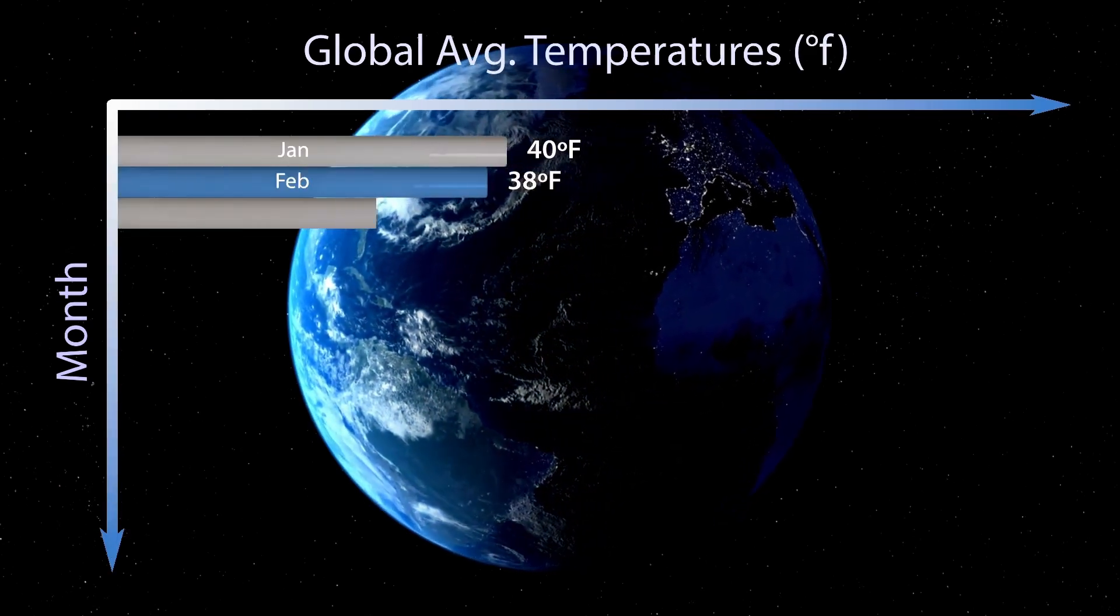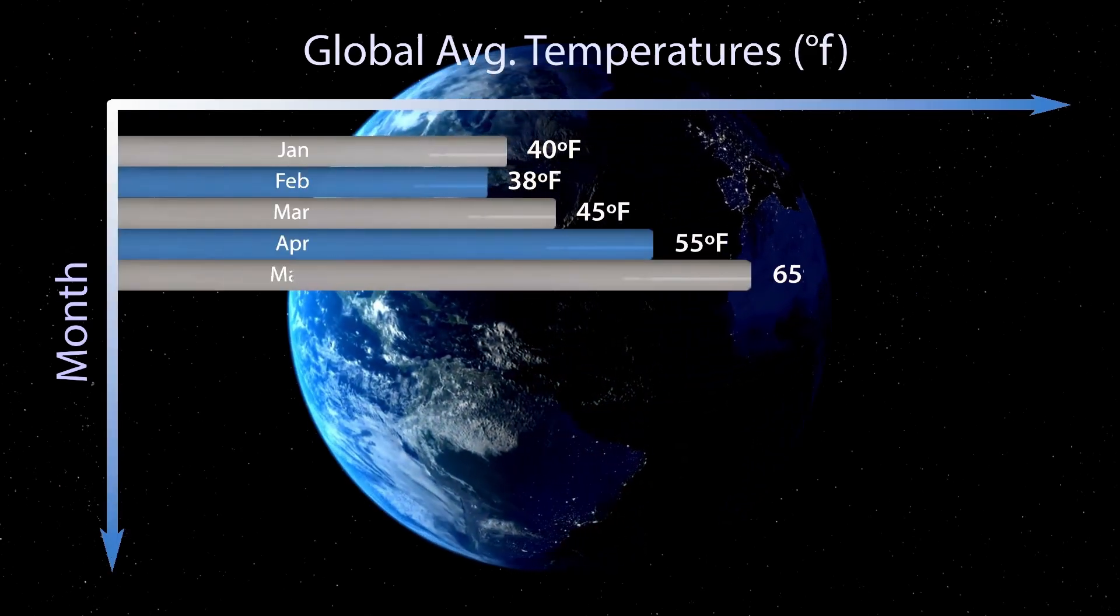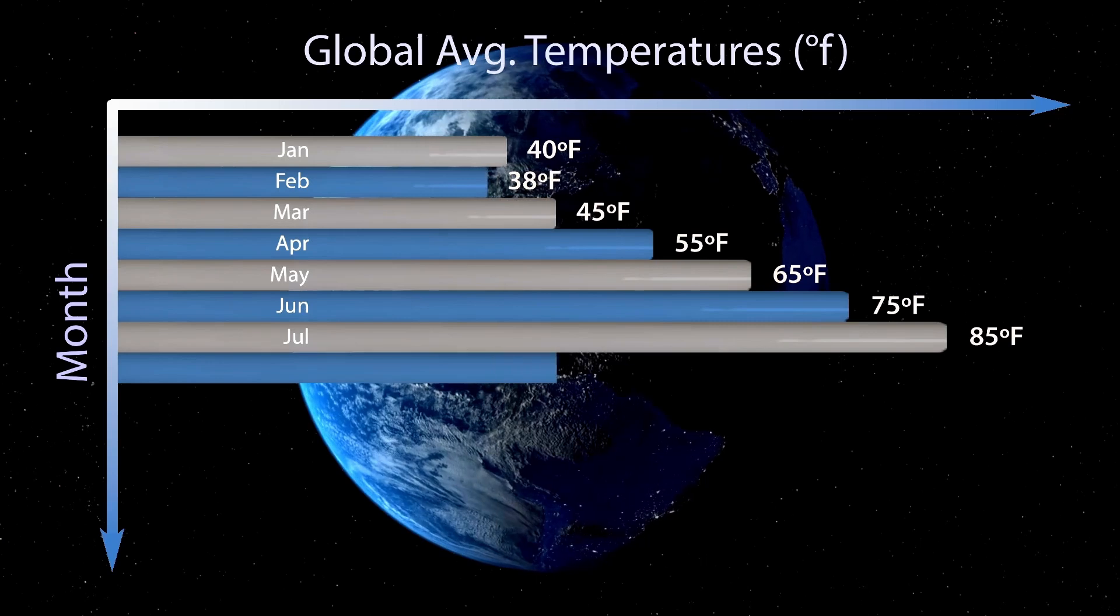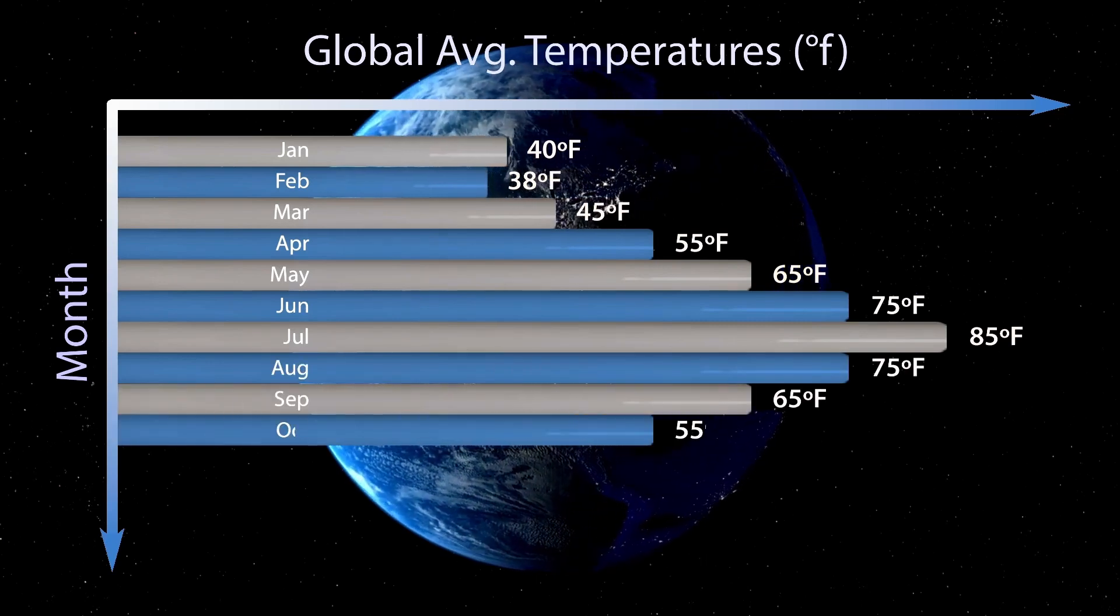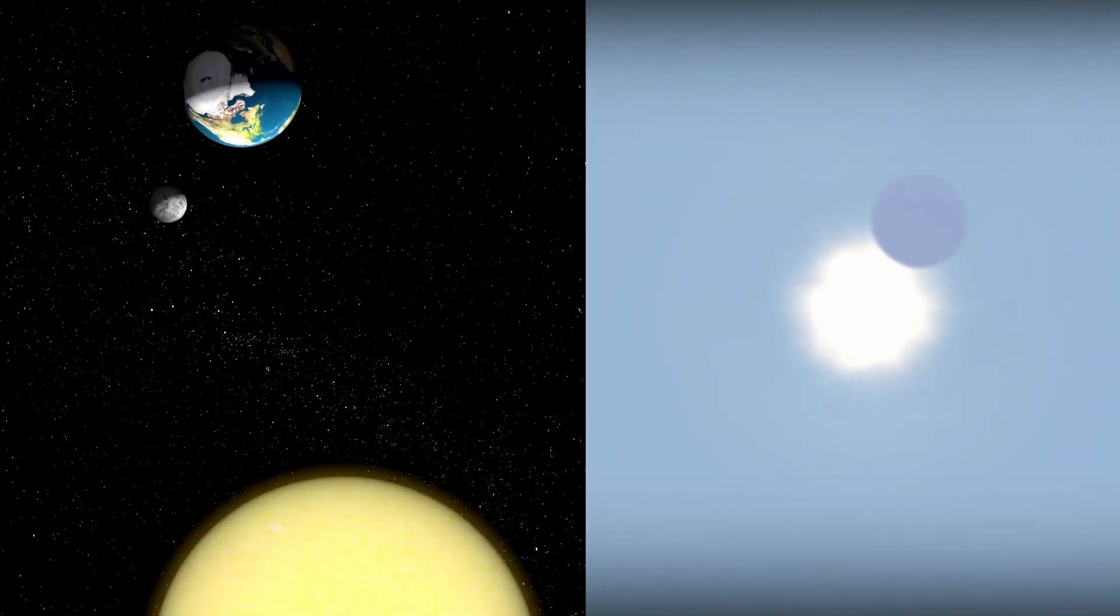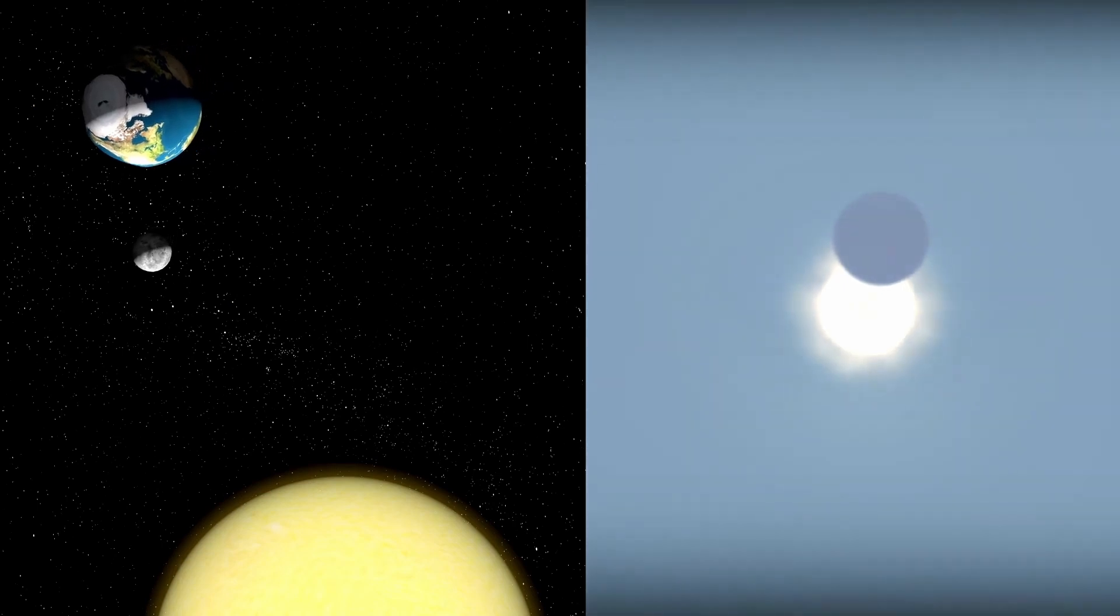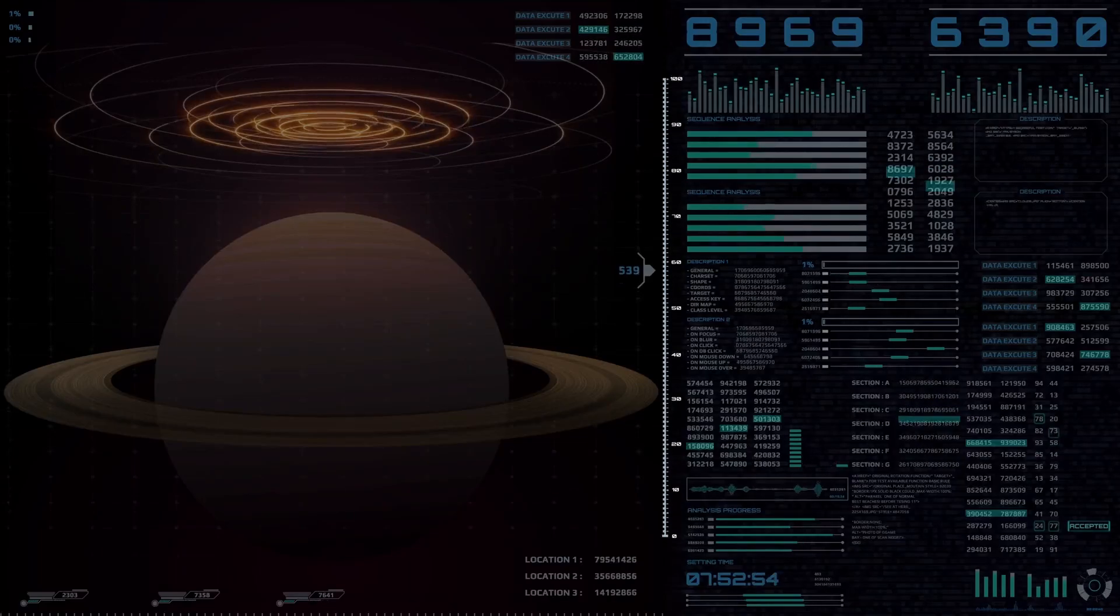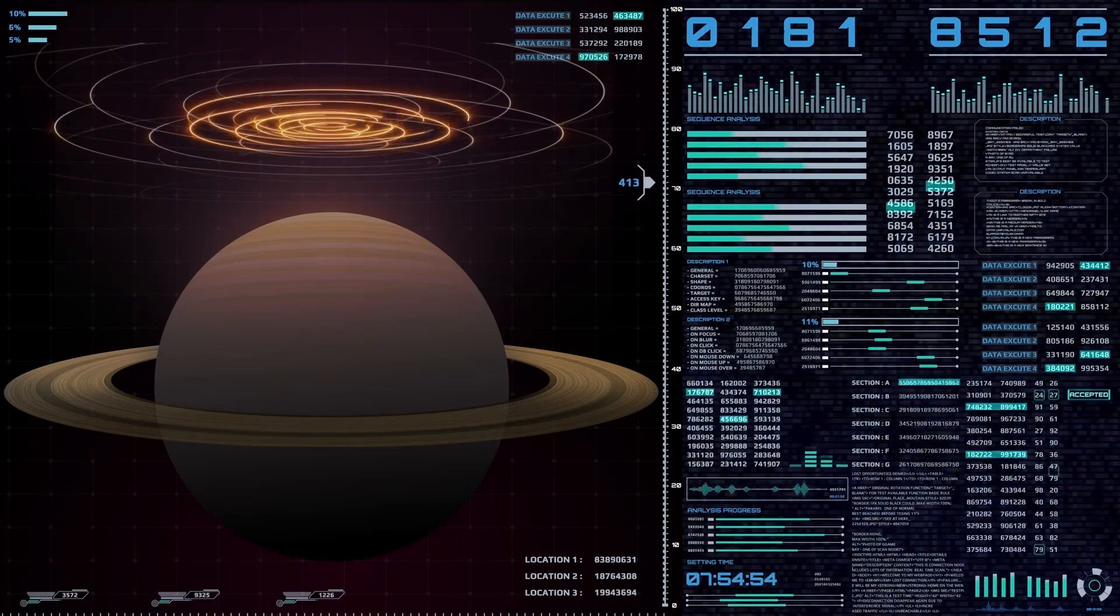Using techniques such as transit observations and radial velocity measurements, astronomers have identified many of these distant worlds. Some share characteristics with Earth and orbit within their star's habitable zones, regions where conditions might support liquid water.